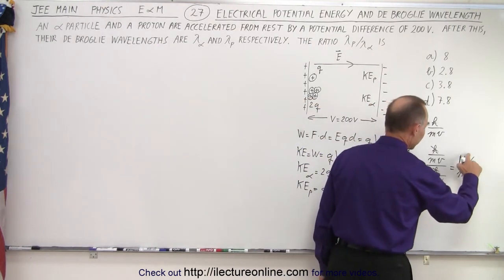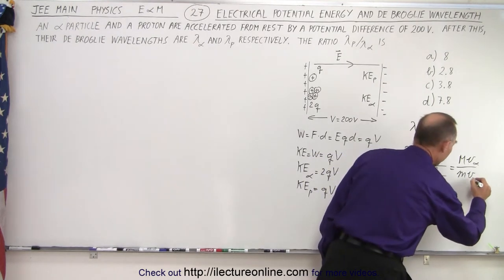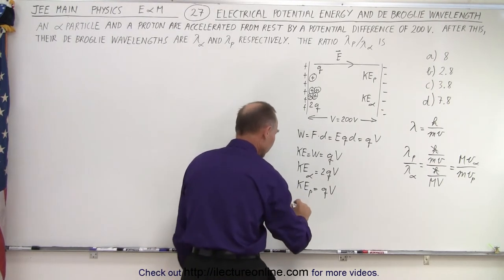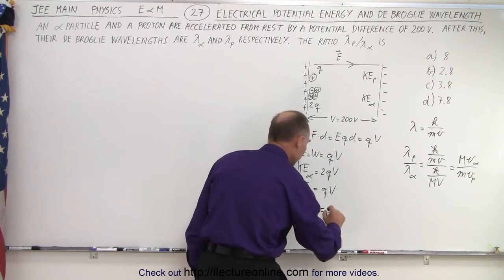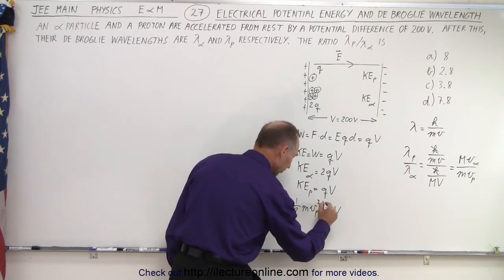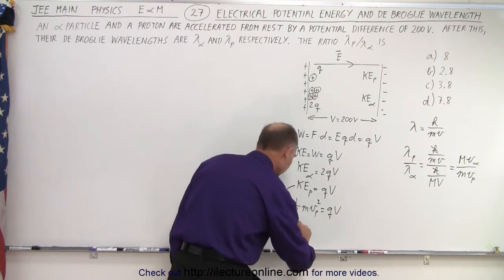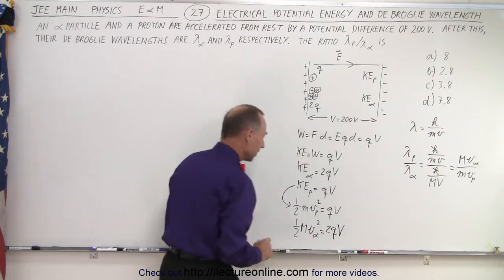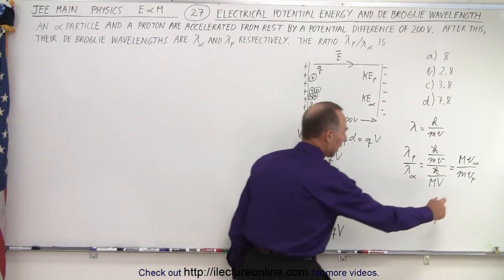We need to be careful not to confuse V for volts with V for velocity — I'll write velocity of the alpha particle and velocity of the proton explicitly. Now we find the velocity: one-half times the mass of the proton times the velocity of the proton squared equals Q times V, and one-half times M times the velocity of the alpha particle squared equals 2Q times V.